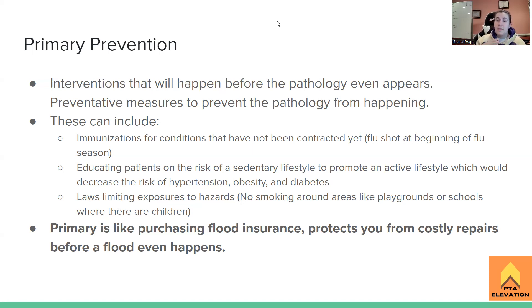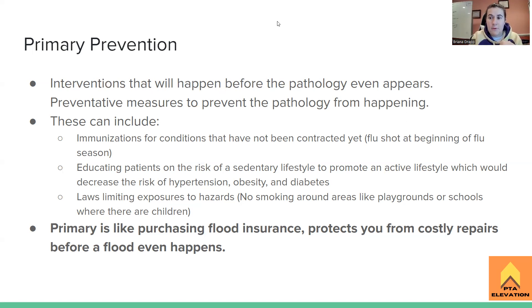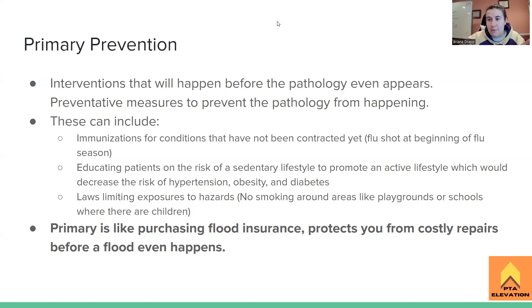Primary prevention can also include laws that limit exposure to hazards — for example, no smoking around playgrounds, schools, or inside buildings. This prevents secondhand smoke, which raises the risk of cancer and pulmonary pathologies. Nobody in these situations has the pathology we're trying to prevent yet. Using a house analogy: primary prevention is like purchasing flood insurance before a flood even happens — like if you live in Tampa, Florida. It protects you before anything goes wrong.